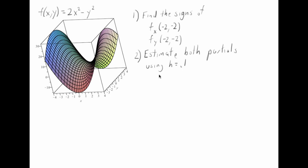In this video, we're going to be talking about partial derivatives. So what I have here is a function of two variables, f(x,y) = 2x² - y², and I'd like to find the signs of the partial derivatives at the point (-2, 2).